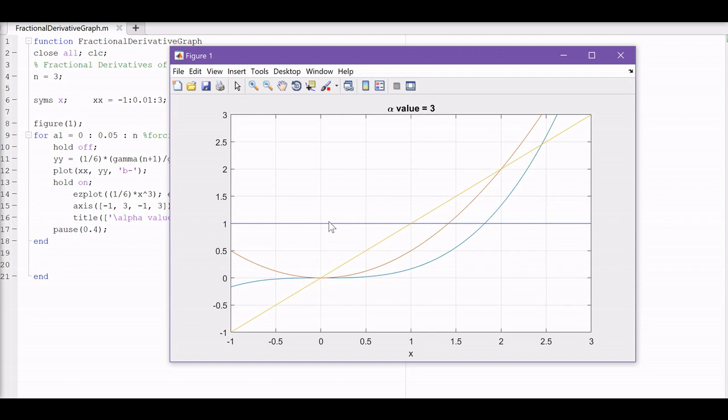And it's pretty much converging to a horizontal line as alpha approaches three. Remember, the original function is a cubic, so the third derivative of a cubic is just a non-zero constant. So let's just watch that just again, just to make sure we got it all.